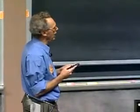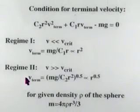And if the velocity, if the speed is way larger than the critical speed, you are in regime two, and then you have a dependence with the square root of r.